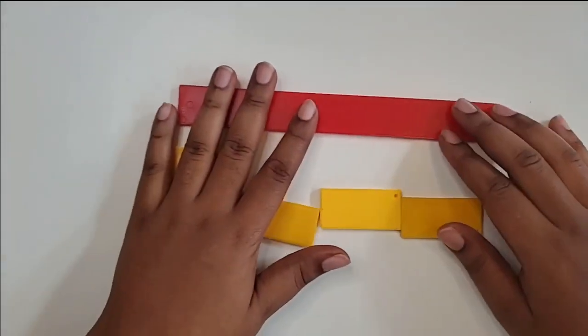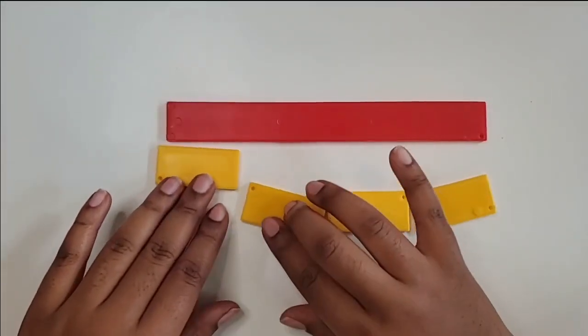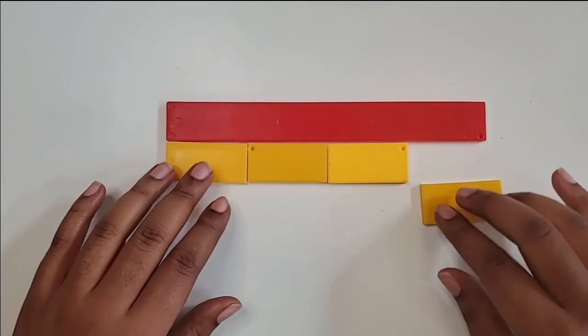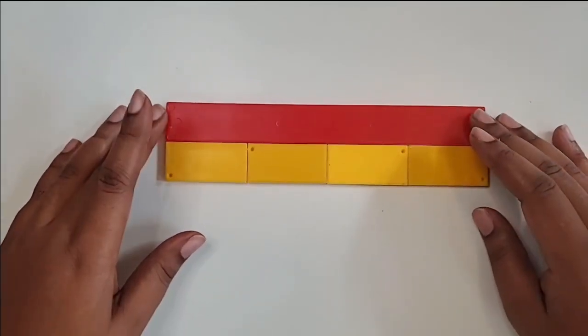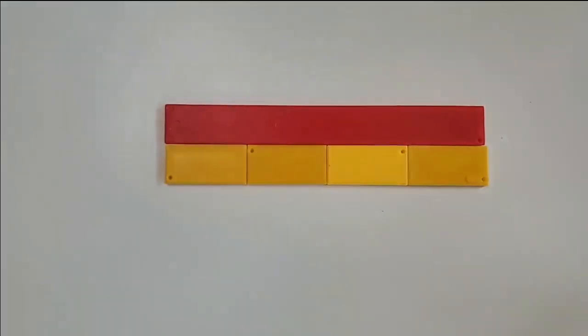We're going to use fourths for this example. We're going to start with four fourths. Four fourths is also equivalent to one whole. If I have four fourths and I want to take away three fourths, what does that look like?